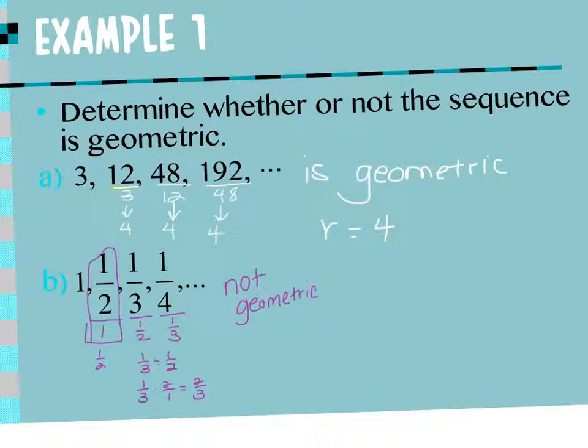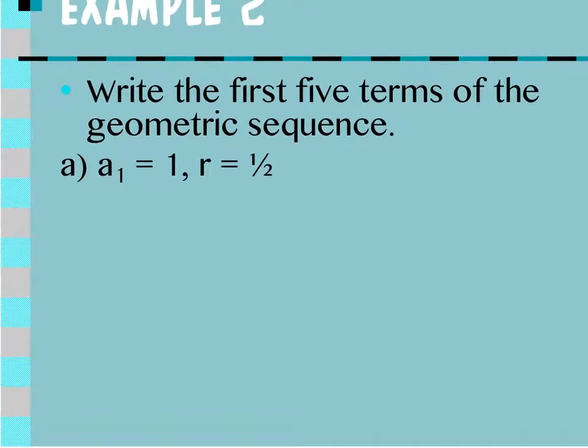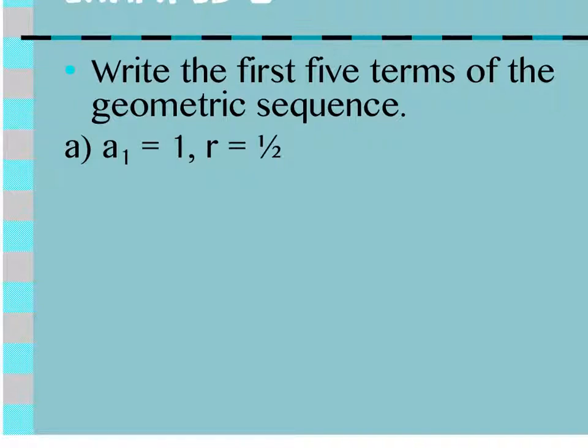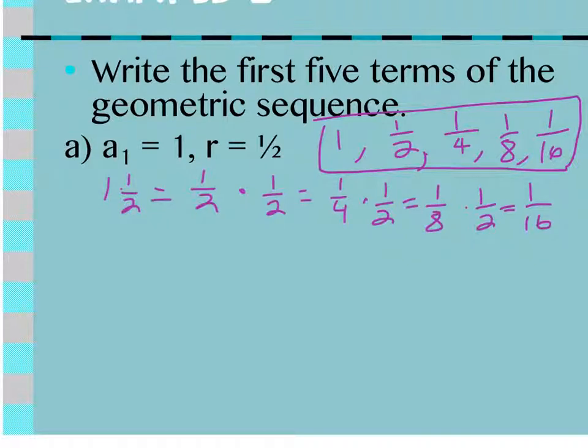Questions so far? Alright. This one says, write the first five terms of the geometric sequence. So in a moment, we're going to learn how to find an equation for a sub n, but we don't need that yet, right? If the first term is 1 and r is 1.5, what do I do to get term 2? Multiply by 1.5. So 1 times 1.5 is 1.5. That means my first term is 1. My second one is 1.5. And then I multiply by 1.5 again, and I get 1.4. Third term is 1.4. Multiply by 1.5 again, and I get 1.8. Fourth term is 1.8. Multiply by 1.5 again, and I get 1.6. First five terms always starts with the one they gave you.